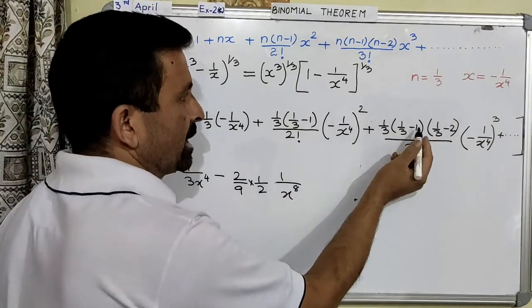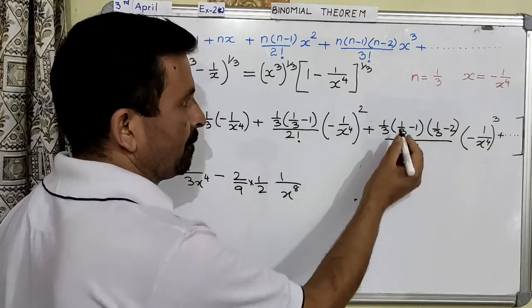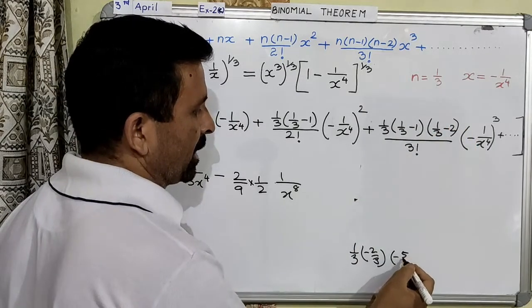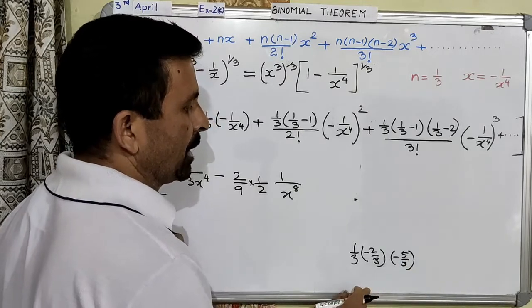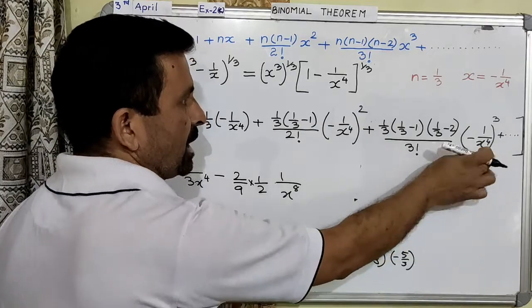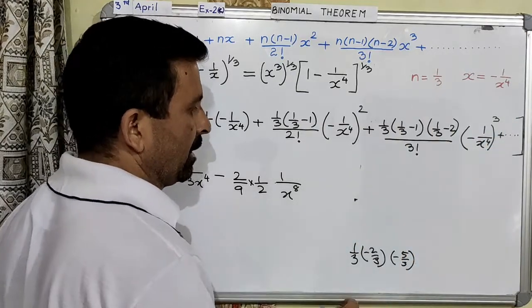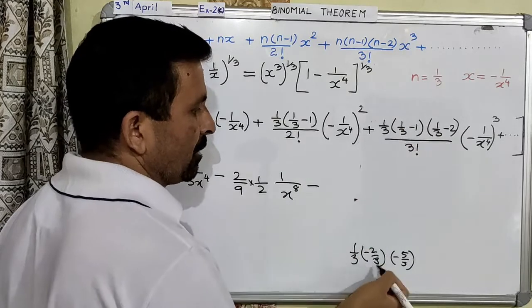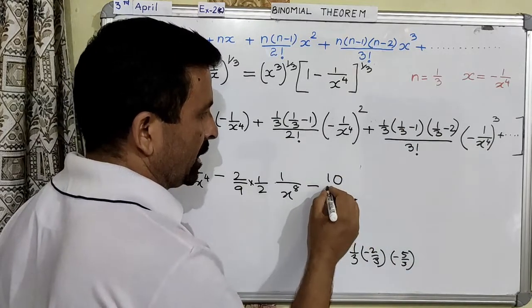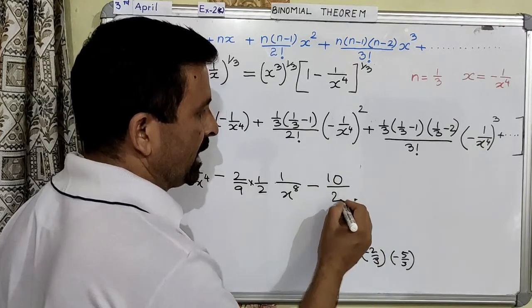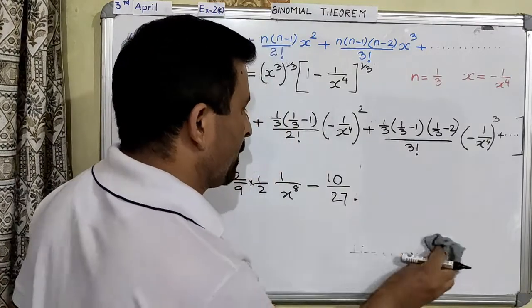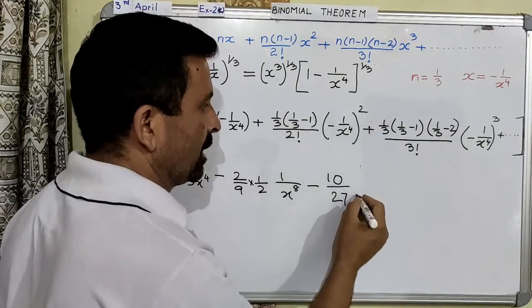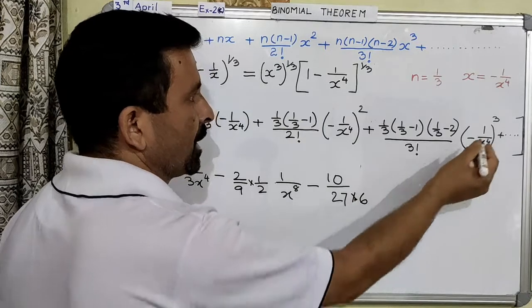Now the last term: 1 over 3 gives negative 2 over 3, and this gives negative 5 over 3. So this is 1 negative quantity, this is 1 negative quantity, and this also is a negative quantity because the power is an odd number — therefore ultimately the product will be negative. So first of all let us simplify: 5 times 2 is 10 in the numerator. In the denominator we will write 3 into 3 into 3, that is 27. And factorial 3 as a product is 6. And then finally this one is 1 over x to the power 12, and so on.